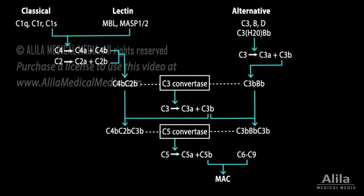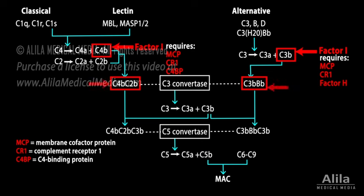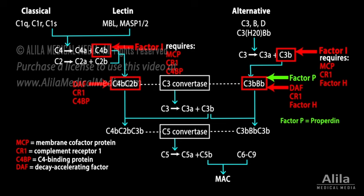Several mechanisms are available. First, C3B and C4B are cleaved and inactivated by the serine protease factor I, the activity of which requires several cofactors. These cofactors are host membrane proteins and factor H, which only binds to eukaryotic membrane. Second, C3 convertases are disassembled by similar host membrane proteins and factor H. In addition, bacterial surface favors the binding of factor P, which stabilizes the C3 convertase of the alternative pathway.